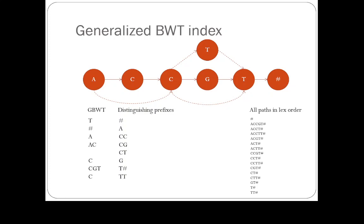You can generalize the Burrows-Wheeler transform with these distinguishing prefixes: you have them in sorted order and look at the preceding symbols in the graph. The end marker is only preceded by T, a path 'CC' is only preceded by A, 'CG' is preceded by C and A, and so forth. It's more or less the same as the BWT except you have as many symbols as there are incoming edges to a node. You can then do backward search in exactly the same way with some bookkeeping — exact search in linear time in this representation.